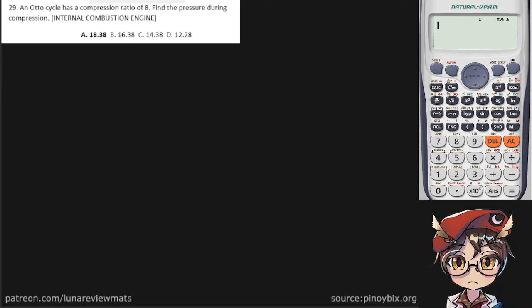An Otto cycle has a compression ratio of 8. Find the pressure during compression.